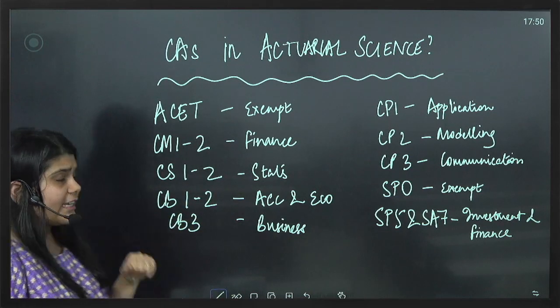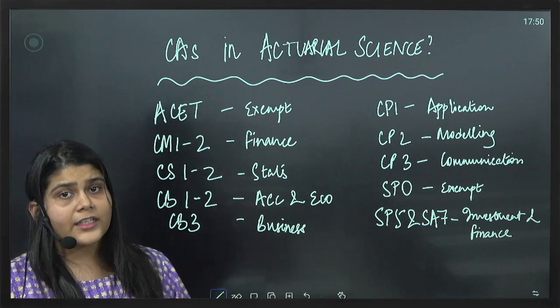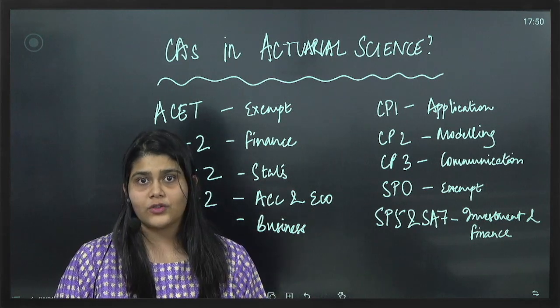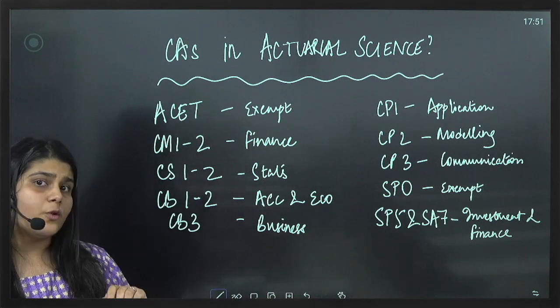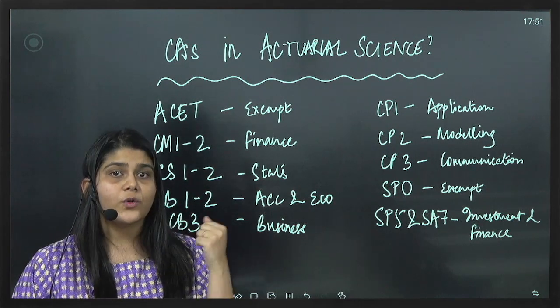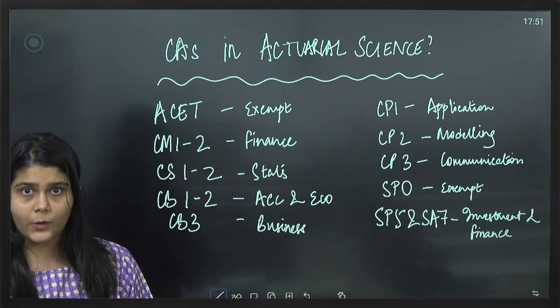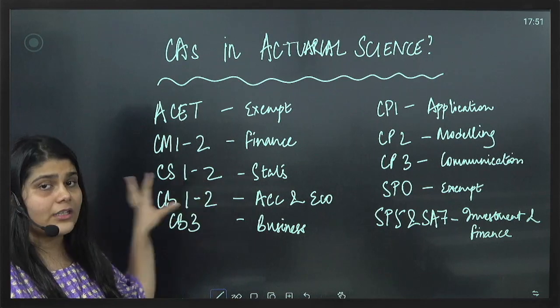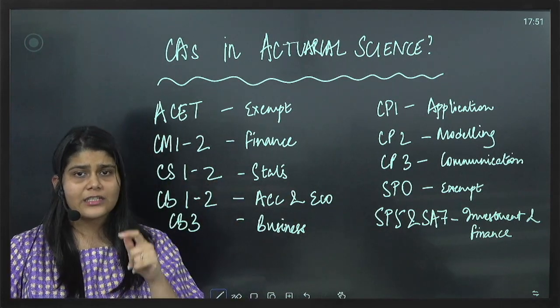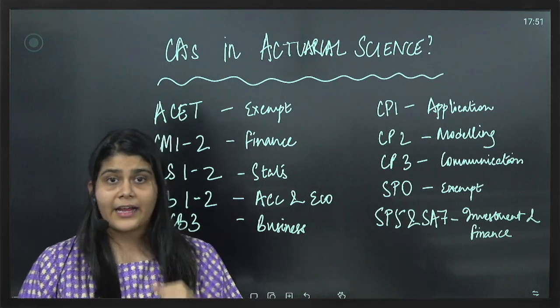CS1, CS2, I would say are the two papers where a CA would have to put in the most effort in Actuarial Science. Because these two papers are the only two papers where there is not much correlation with the Chartered Accountancy course. At the same time, not just the content but also there is programming which is something new for CAs.